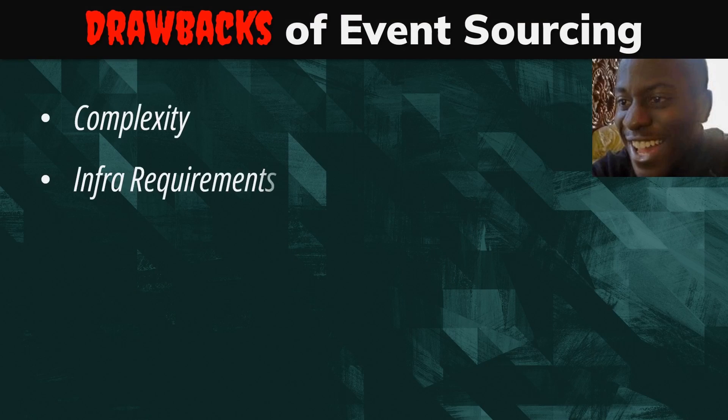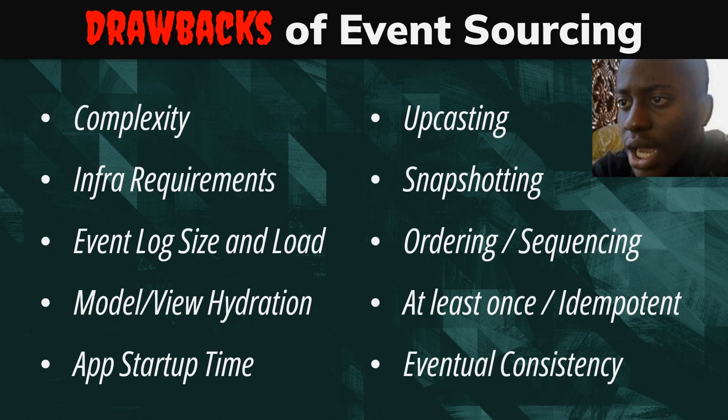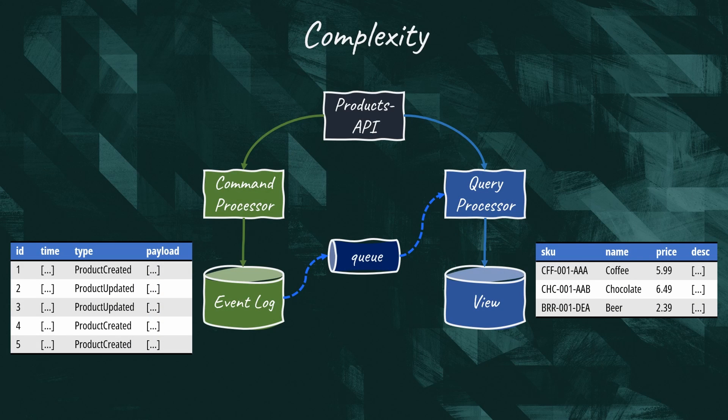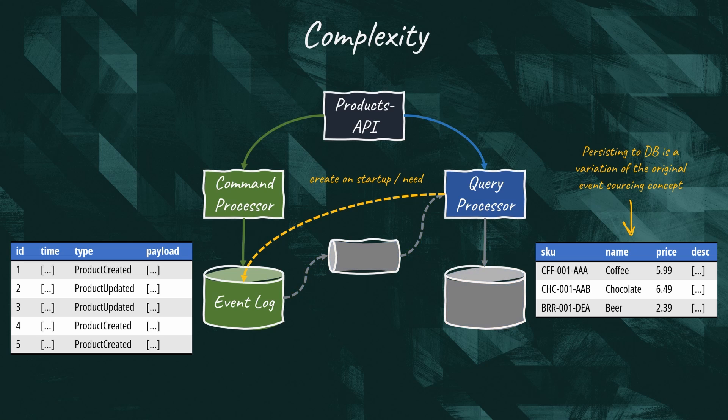Now, time for the bad news. The list of challenges is very long and would require more than one video to cover each point. Event sourcing increases the complexity of our applications — nothing comes for free. In a typical application, we just need to populate our database, while in an event-sourced system, we have the burden of creating and maintaining the event log and hydrating the model from events. We also need to select an event log able to support the load generated by our application — it needs to store a large number of events and potentially serve many requests per second.